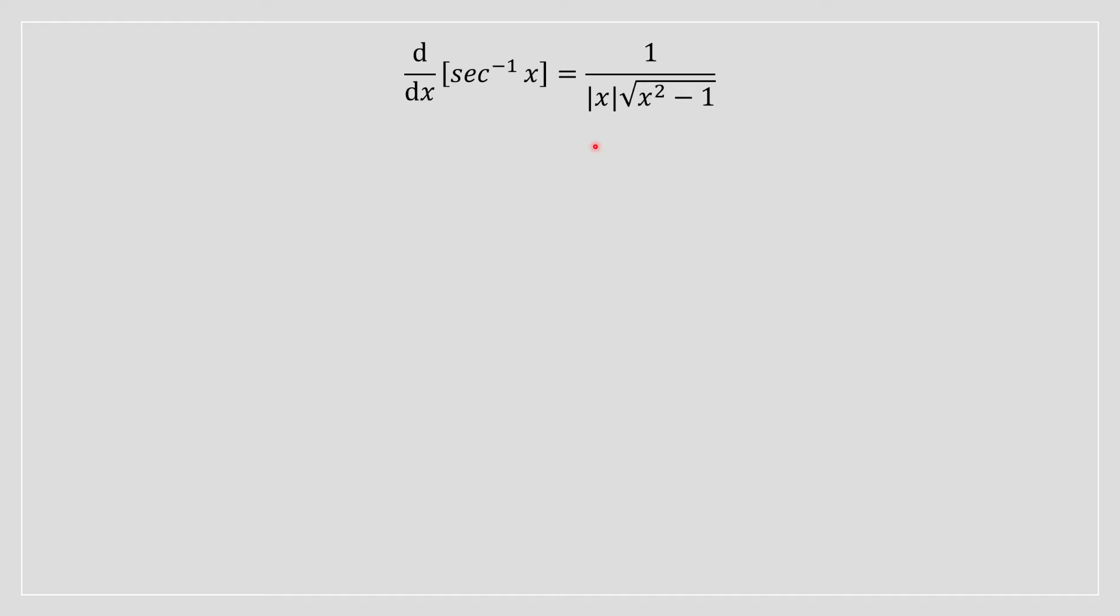We are taking the derivative of an inverse trig function. Right away we know we're not going to be using limit definition. Instead, we're going to be applying implicit differentiation. When you're dealing with arc secant of x, there's an additional step you'll have to apply, but besides that, it's the same series of steps.